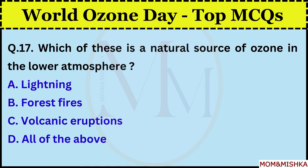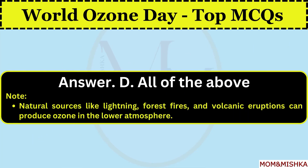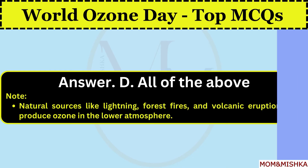Which of these is a natural source of ozone in the lower atmosphere? All of the above. Option D. Natural sources like lightning, forest fires, and volcanic eruptions can produce ozone in the lower atmosphere.